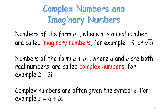On the exam paper, complex number questions are usually very clearly identified because they start by defining i² as equal to minus 1. These questions tend to appear on Paper 1, Section A, and tend to be standalone questions, though some mock exams have tried to tie them into Section B questions.